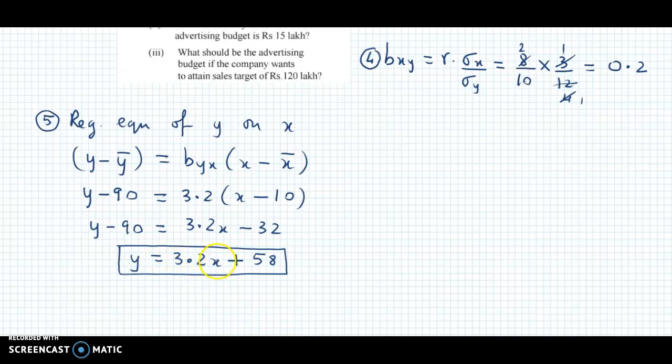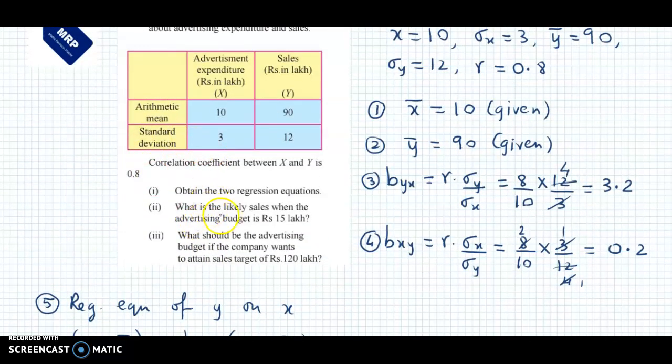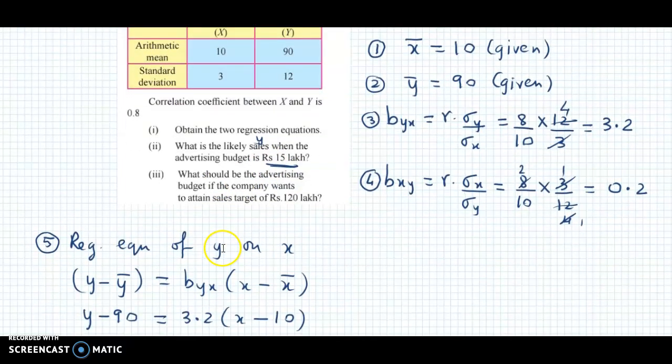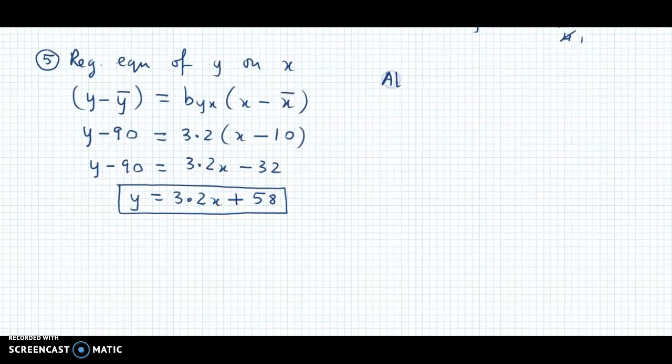Now with this equation's help, we can predict the value of y. If we look at the second part, what is the likely sales? We need to find y's value when x is 15 lakhs. So using the y on x equation, we can predict the missing value of y. At x = ₹15 lakh.